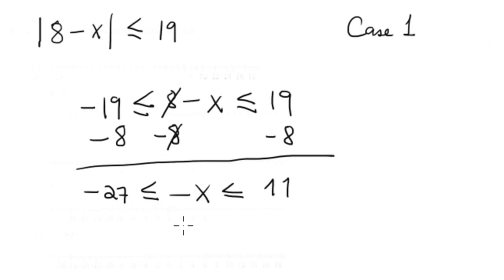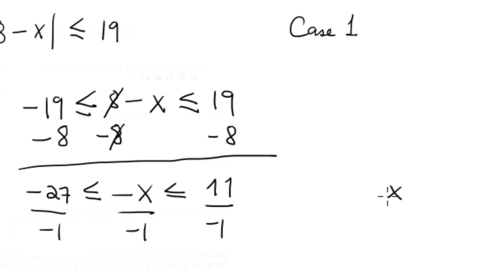Finally, divided by negative one on both sides, the answer is x is greater than or equal to negative 11 and less than or equal to 27.